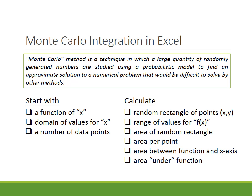In our case, we're going to integrate a function. We'll start with some function of X, a domain of values for X over which we'll integrate, and we'll decide on a number of random points to use. In Excel, we'll calculate a rectangle of points generated randomly, get the range of values for the function, find the area per point, and then count just the area between the function and the X-axis — with the understanding that integration is often interpreted as the area under the curve.